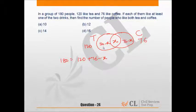So 120 minus x plus 76 minus x is equal to 180, hence x equals 120 plus 76, that is 196 minus 180, equal to 16. Hence the number of people who like both tea and coffee is equal to 16.